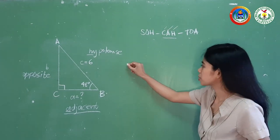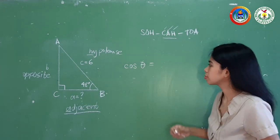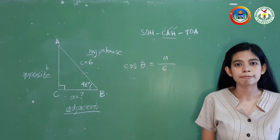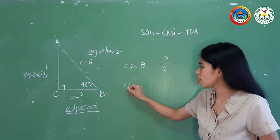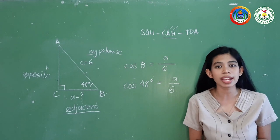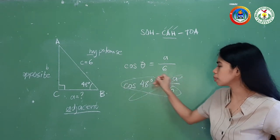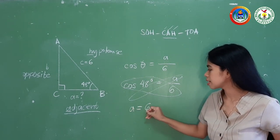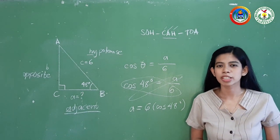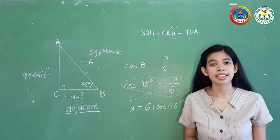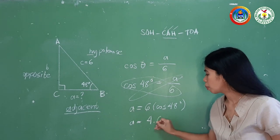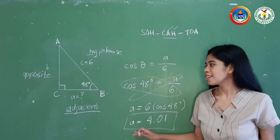So, cosine of 48 degrees equals A over 6. To find the measurement of A, we cross-multiply: A equals 6 times cosine of 48 degrees. Using your calculator, A equals 4.01. So A, the adjacent side, is equal to 4.01 units.